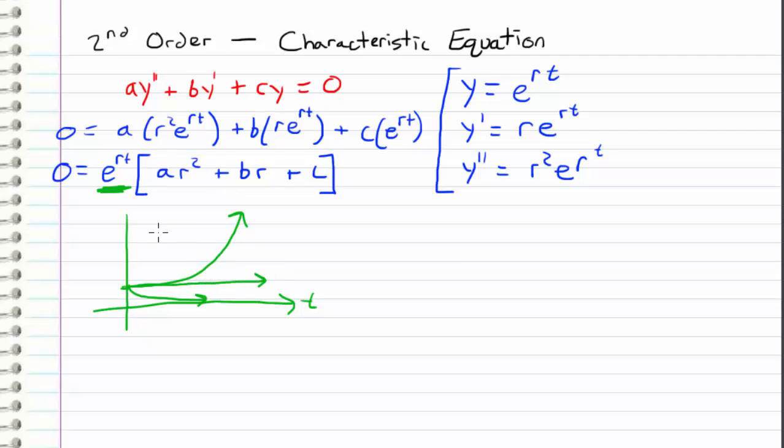But in all these cases we notice that e to the rt is never zero. It's non-zero along the entire domain for all values of r. And because of that we can actually divide both sides of this equation by e to the rt, which basically cancels it out because zero divided by e to the rt is again zero.